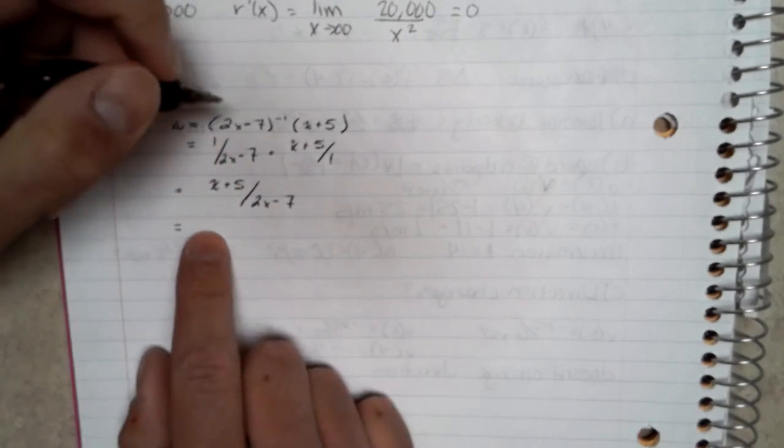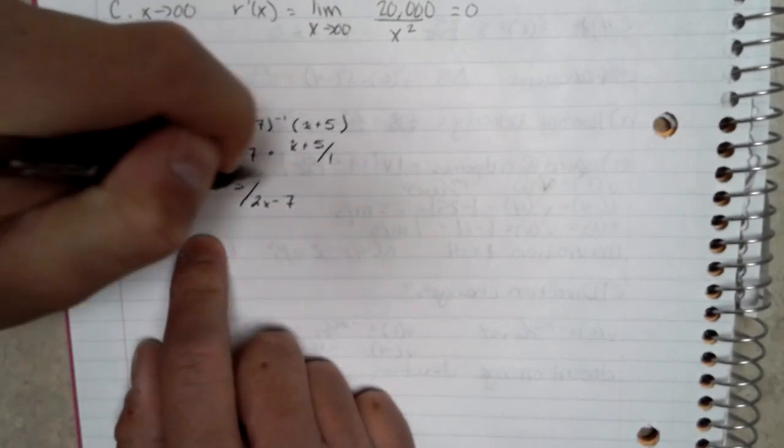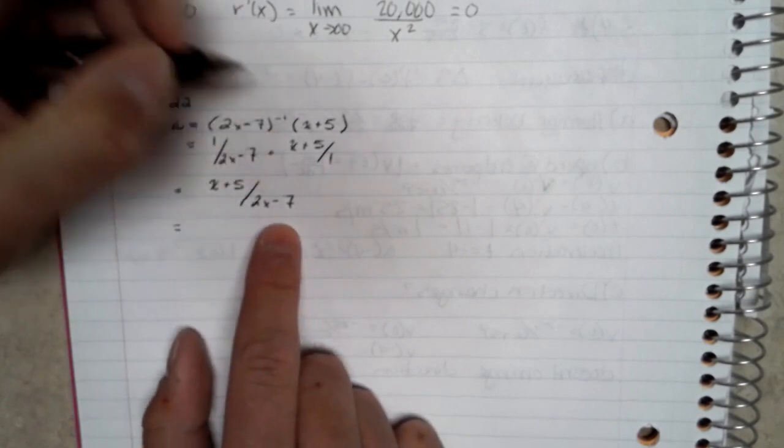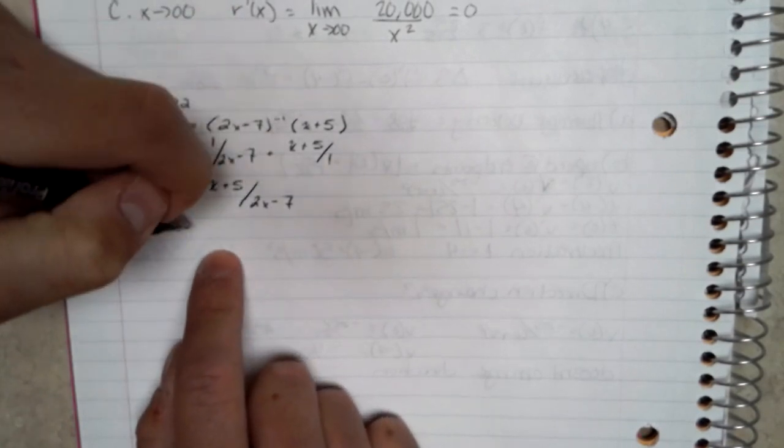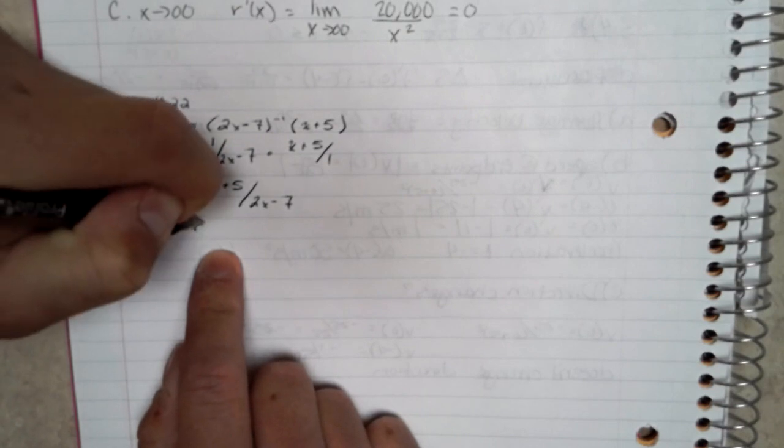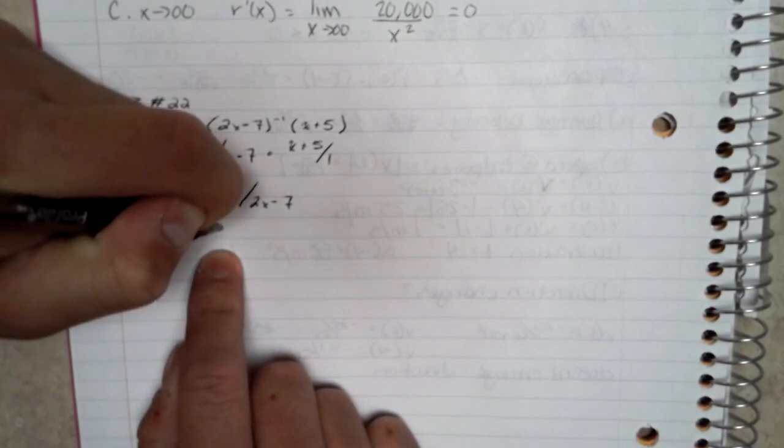So the derivative: we'll get f'(x) times g(x). So the derivative of (x plus 5) becomes 1 times (2x minus 7),